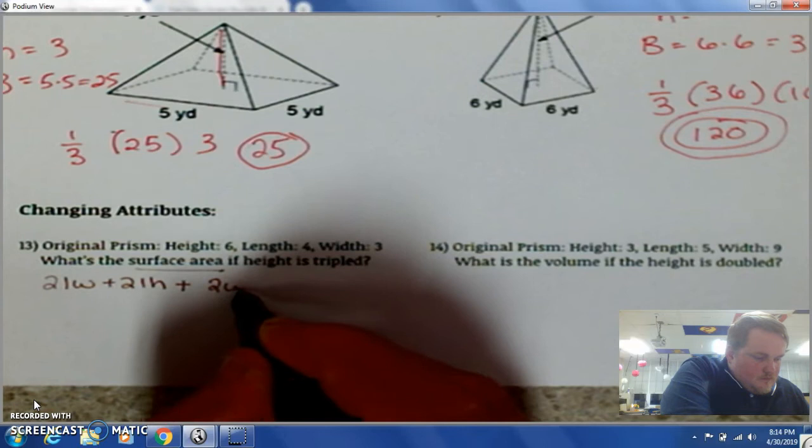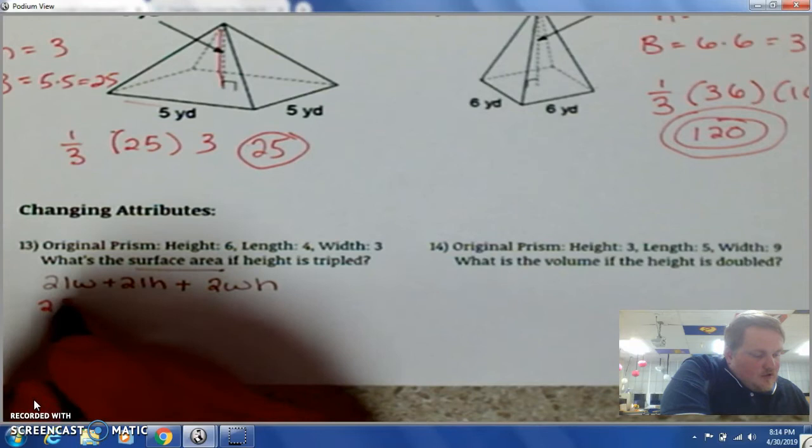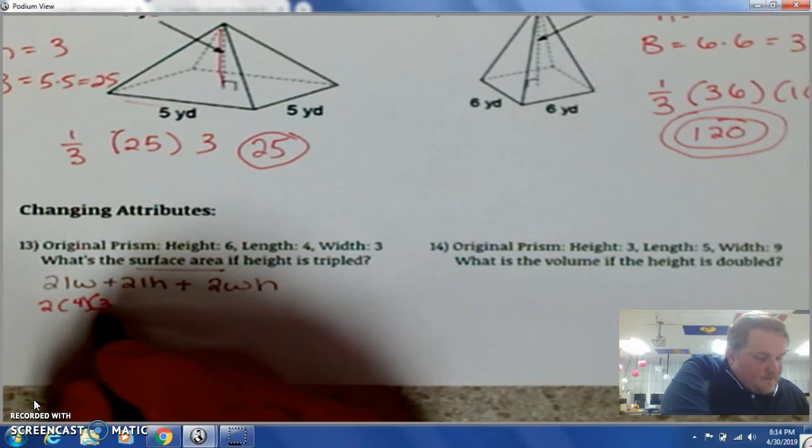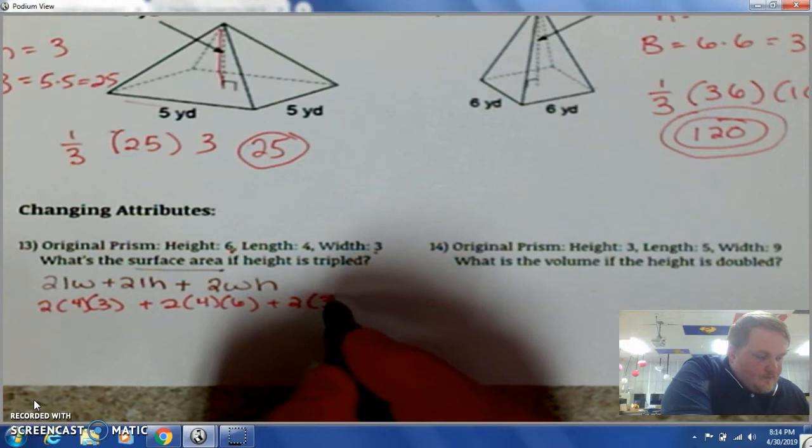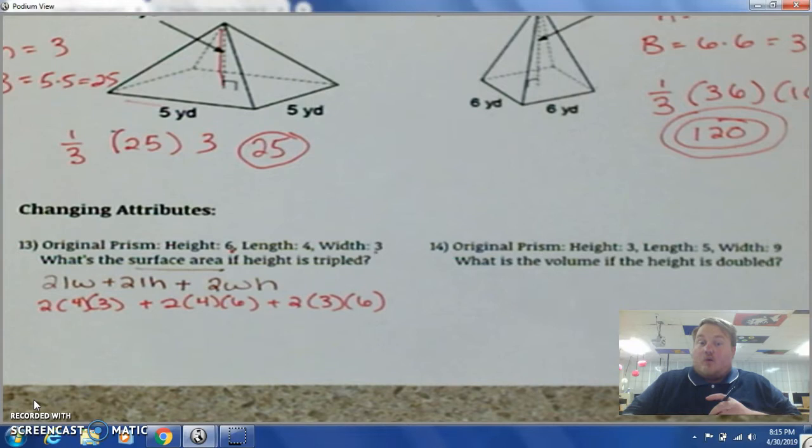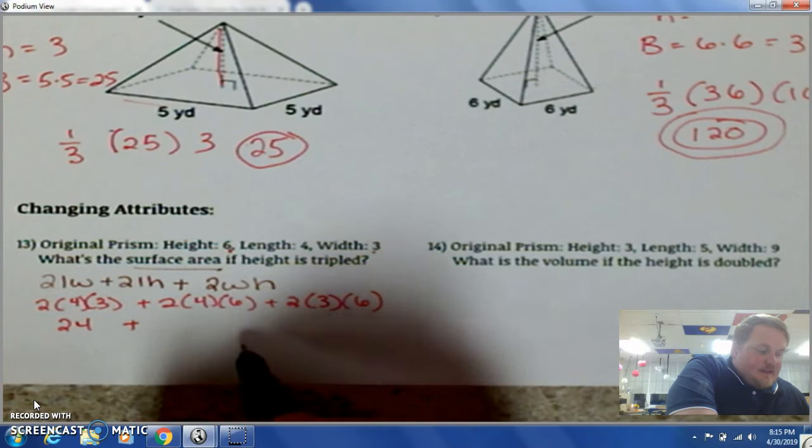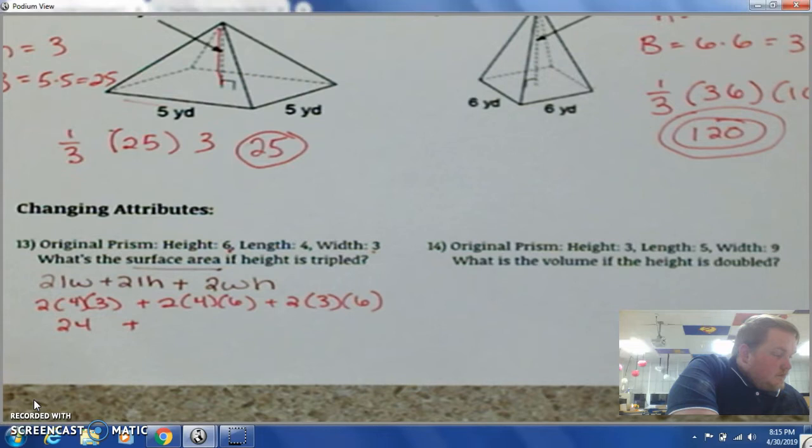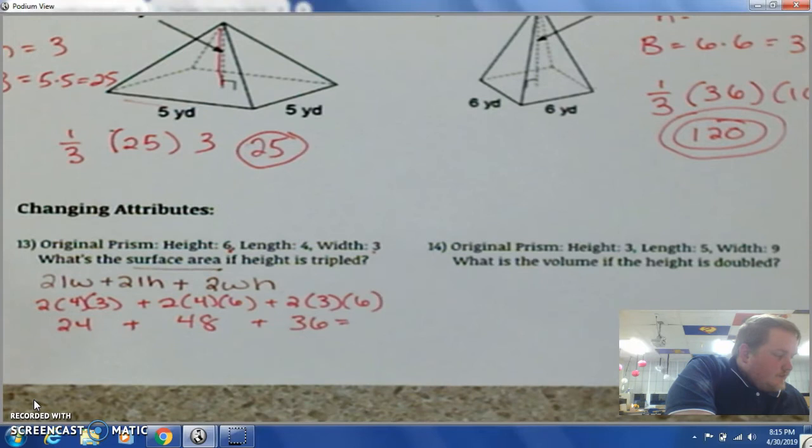And let's go ahead and substitute the original information. 2 times our length is 4, L stands for length. And our width is 3. Plus 2 times our length is 4, our height is 6. Plus 2 times our width is 3, and our height is 6. We're going to solve each one of these and then add them together. 2 times 4 is 8 times 3 is 24. Plus 2 times 4 is 12 times 6 is 48. And if I add all those together, I get 108.